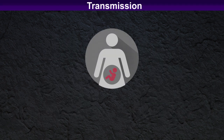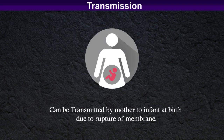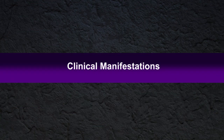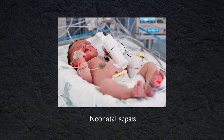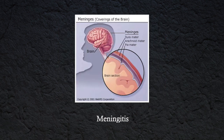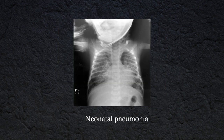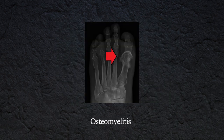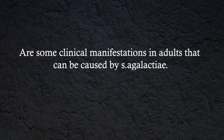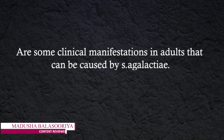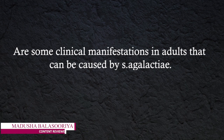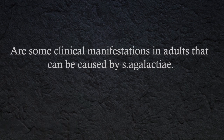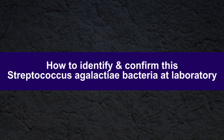It can be transmitted from mother to infant at birth due to rupture of membranes. When we consider clinical manifestations, it can cause neonatal sepsis and meningitis, also neonatal pneumonia. Not only that — pneumonia, endocarditis, arthritis, osteomyelitis, and cellulitis are some clinical manifestations in adults that can be caused by Streptococcus agalactiae bacteria.